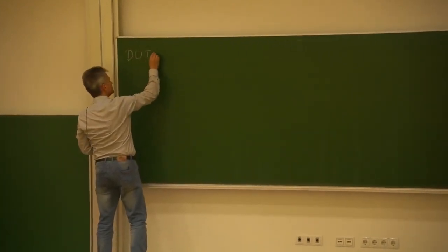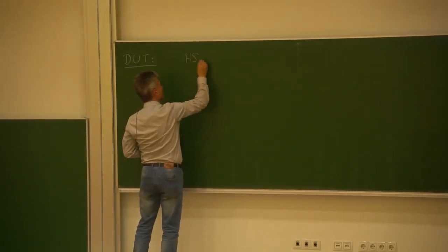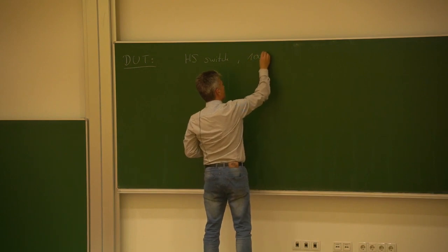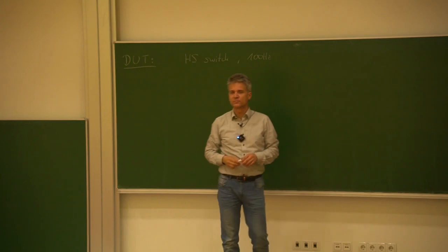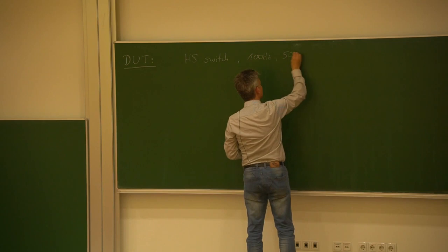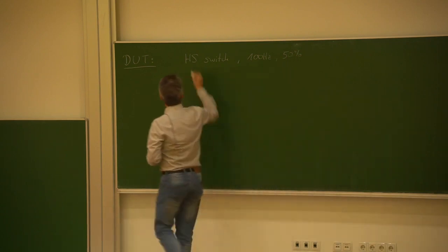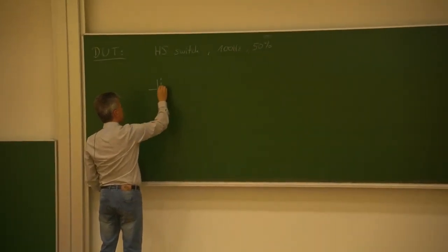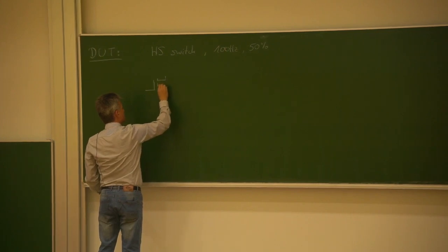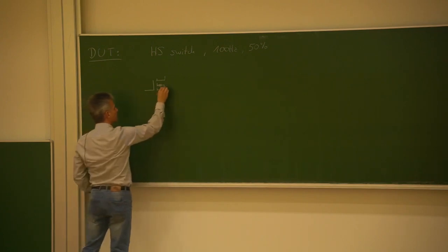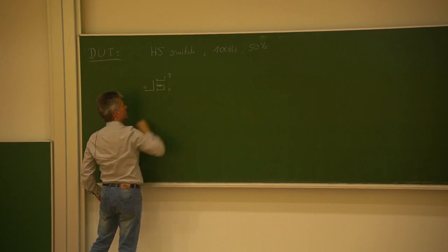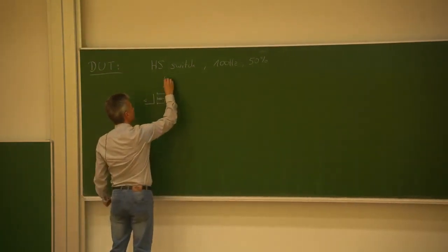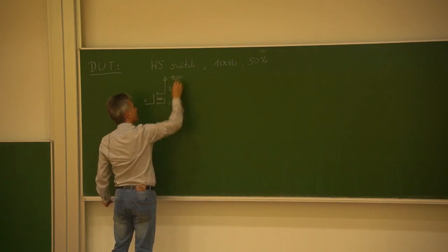So we have our device on the test. This is a high-side switch operating at 100 Hz with a duty cycle of 50%. So we're drawing our high-side switch — it's an N-channel device. We have the gate, the drain, and the source here. The drain is connected to the high terminal, the high potential of our battery, so here we have plus 13.5V for example.